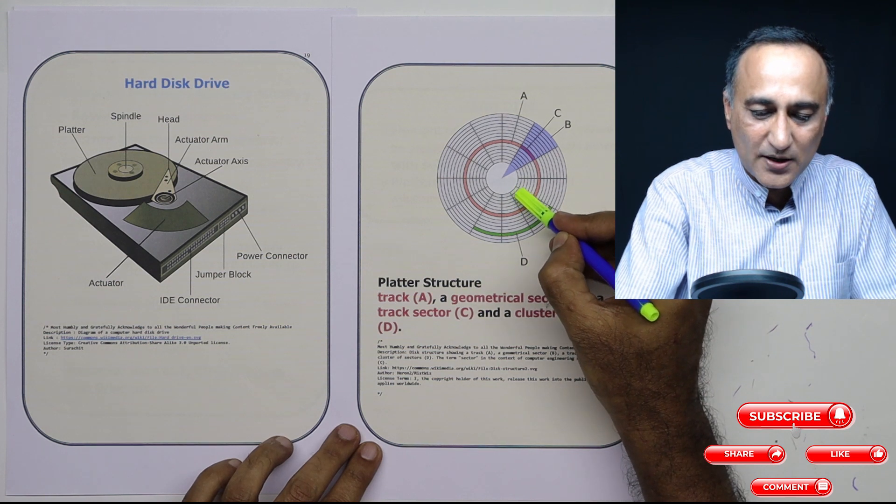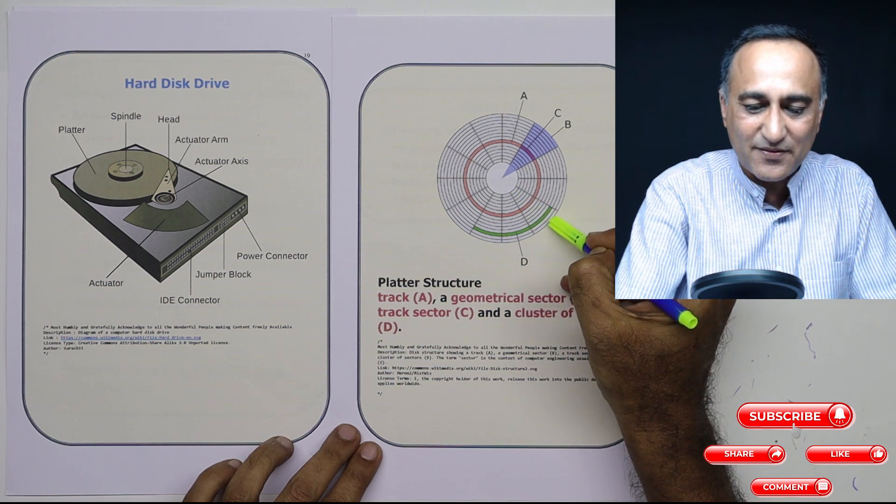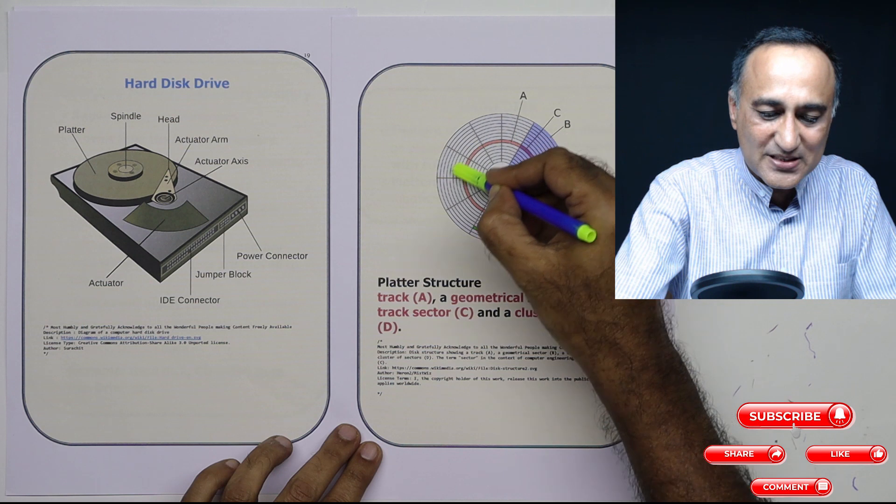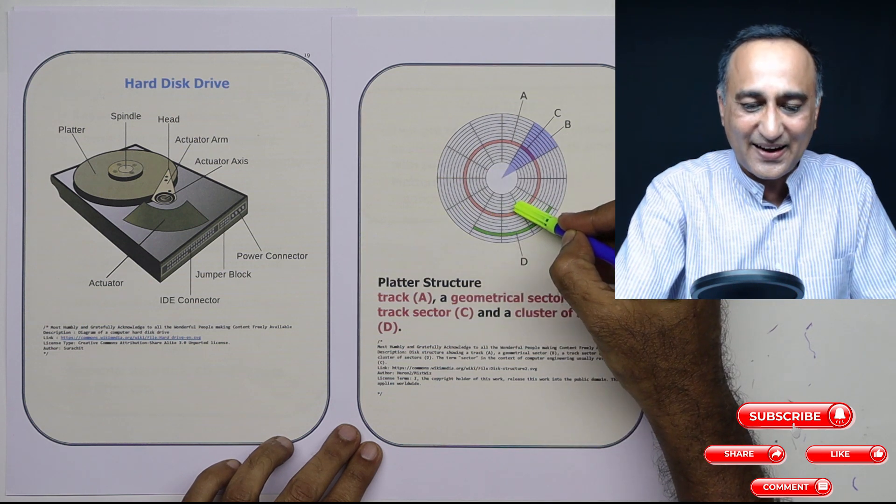So this is track 0, 1, 2, 3, 4, 5, 6, 7, 8. This red color fellow is an example of one single track.